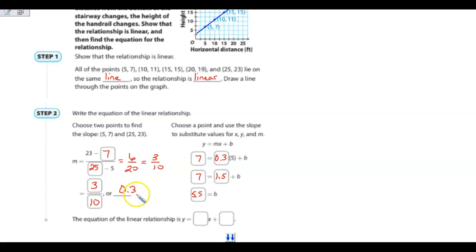Now that I know my slope, and I know my y-intercept, I can write my equation, y equals 3 tenths x plus 5 and 5 tenths.